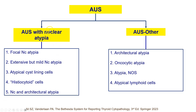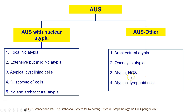Under the nuclear atypia section, we have focal nuclear atypia, extensive but mild nuclear atypia, atypical cyst lining cells, atypical histiocytoid cells, and cases with both nuclear and architectural atypia. In the AUS other category, there is architectural atypia without accompanying nuclear atypia, oncocytic atypia — with a separate video describing an approach to oncocytic lesions in the thyroid gland — atypia NOS, and atypical lymphoid cells.